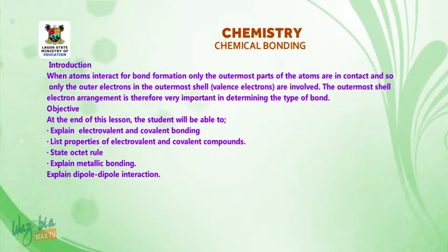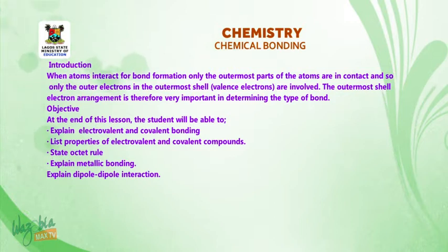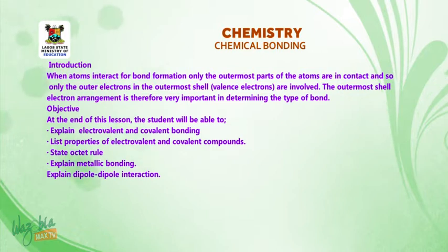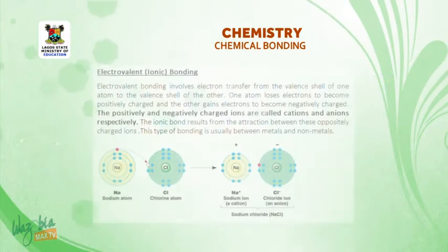Objective. At the end of this lesson, the student will be able to explain electrovalent and covalent bonding, list properties of electrovalent and covalent compounds, state the octet rule, explain metallic bonding, and explain dipole-dipole interaction.